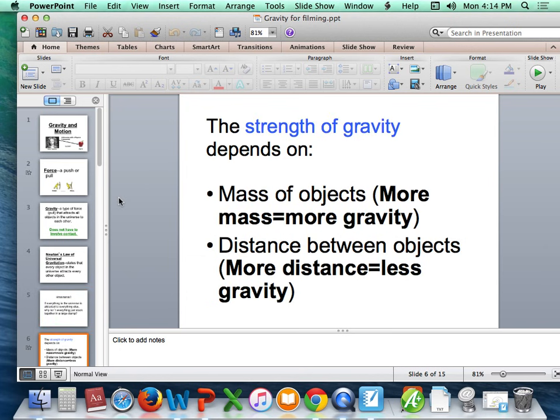The strength of gravity depends on two things. The mass of the object. Basically, the more massive something is, the more gravity that it has. For example, you have more gravity than your science notebook because you are more massive. The Earth has more gravity than you because it's more massive than you. The Sun has more gravity than the Earth because it's more massive than the Earth.